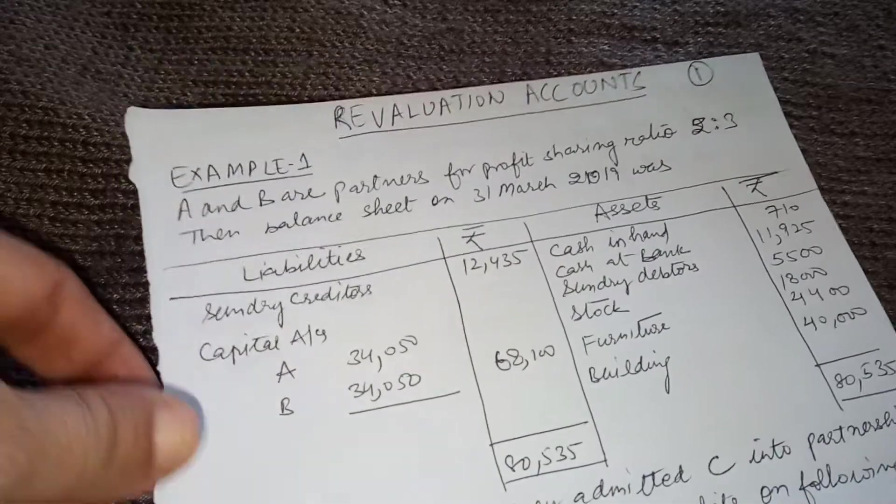The first thing we prepare is the revaluation account. For the basic adjustments: stock and furniture are to be reduced by 10%, which causes a loss — so stock will be credited and revaluation account will be debited. The stock is 18,000, so 10% of 18,000 equals 1,800.